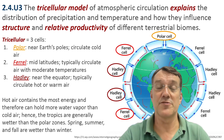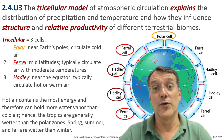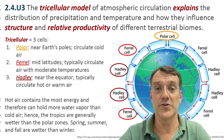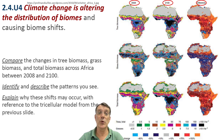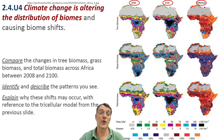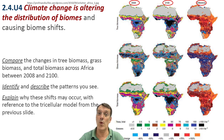This circulation pattern creates predictable climate zones that influence the distribution of biomes. Climate change is altering the distribution of biomes. This image shows projected changes in tree biomass, grass biomass, and total biomass across Africa between 2008 and 2100. Notice the significant shifts predicted, particularly in the map on the right. These changes occur as warming temperatures alter precipitation patterns and push climate zones towards the poles.